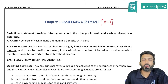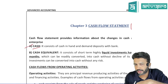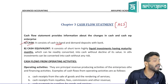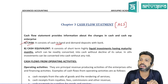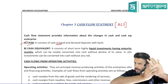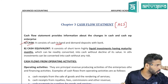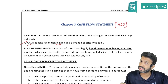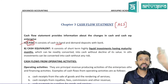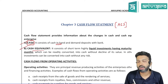Coming back to the topic: from an AS-3 perspective, 'cash' refers to both cash in hand as well as cash at bank. So if you have money in a savings bank account, current account, etc., that is also considered as cash for AS-3 purposes.